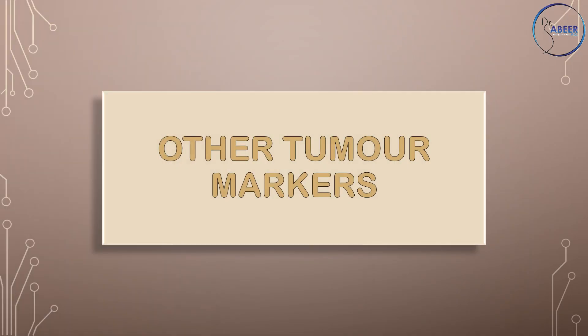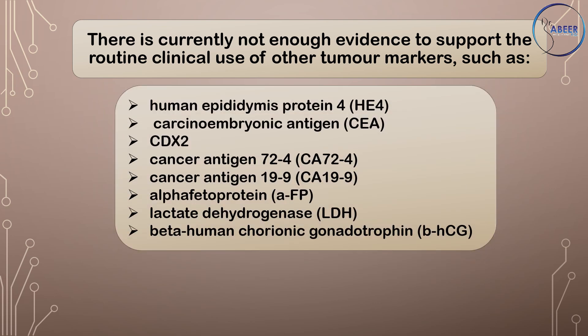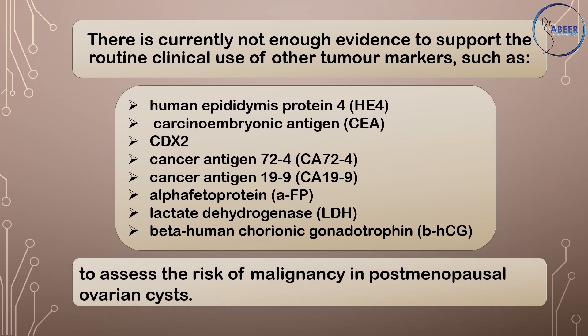Other Tumor Markers: There is currently not enough evidence to support the routine clinical use of other tumor markers such as human epididymis protein 4 (HE4), carcinoembryonic antigen (CEA), CDX2, cancer antigen 72-4, cancer antigen 19-9, alpha-fetoprotein, lactate dehydrogenase (LDH), or beta-human chorionic gonadotropin (beta-HCG) to assess the risk of malignancy in postmenopausal ovarian cysts.